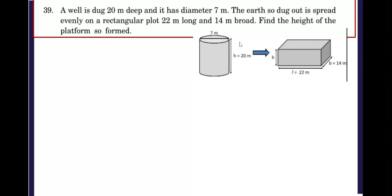So here you can see in the figure the well is in the form of a right circular cylinder. You see the diameter is 7 meters and height is 20 meters. Now the earth is dug out from this well and the earth which is dug out is spread evenly on a rectangular plot.